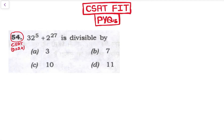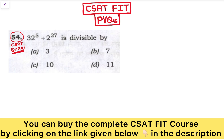Hello friends, welcome to CSAT with PYQs. This is a question asked in CSAT 2024. The question is: 32 to the power 5 plus 2 to the power 27 is divisible by what?